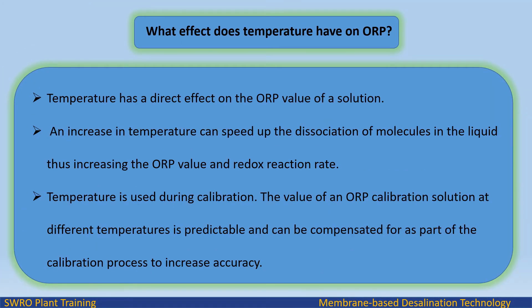An increase in temperature can speed up the dissociation of molecules in the liquid, thus increasing the ORP value and redox reaction rate. Temperature is used during calibration. The value of an ORP calibration solution at different temperatures is predictable and can be compensated for as part of the calibration process to increase accuracy.